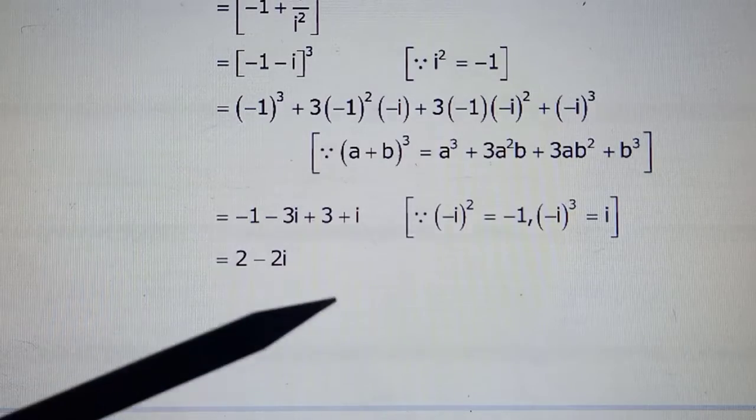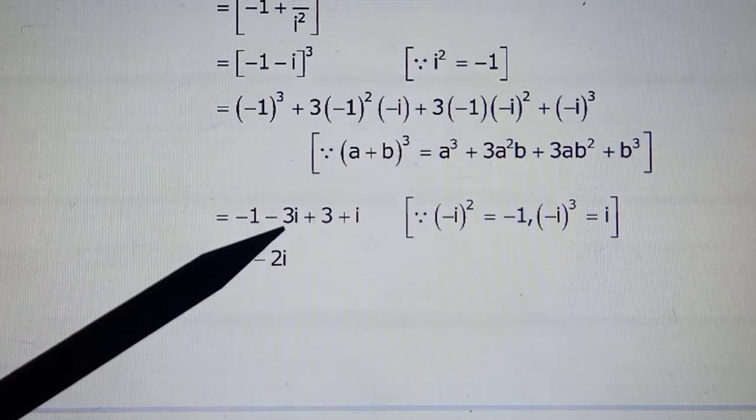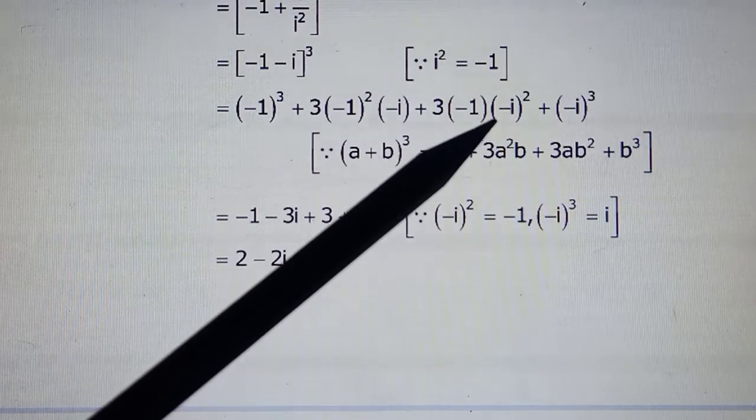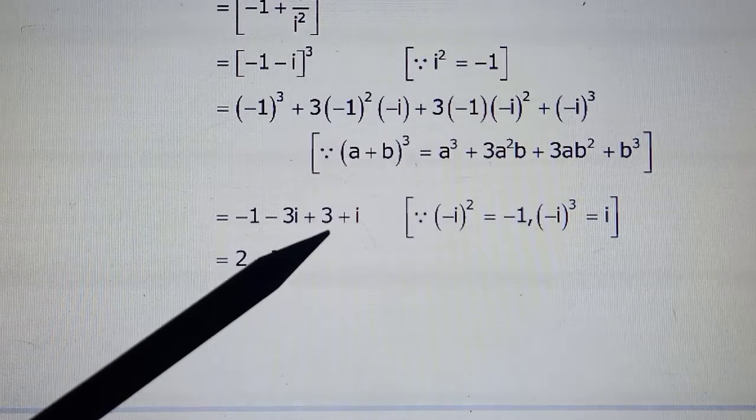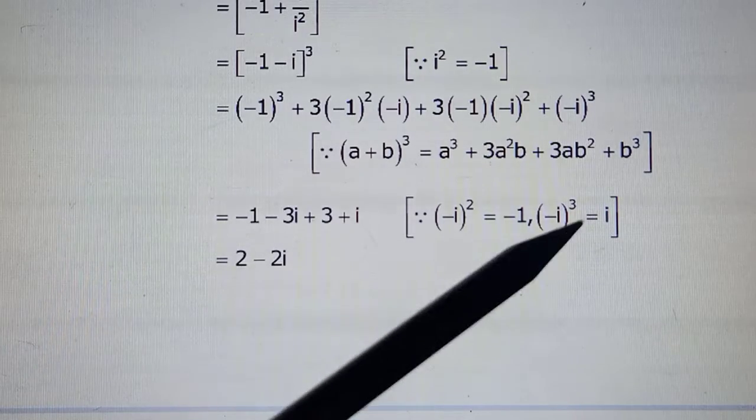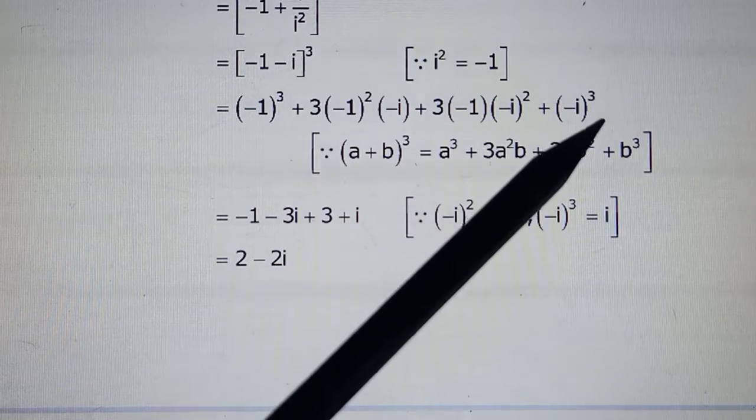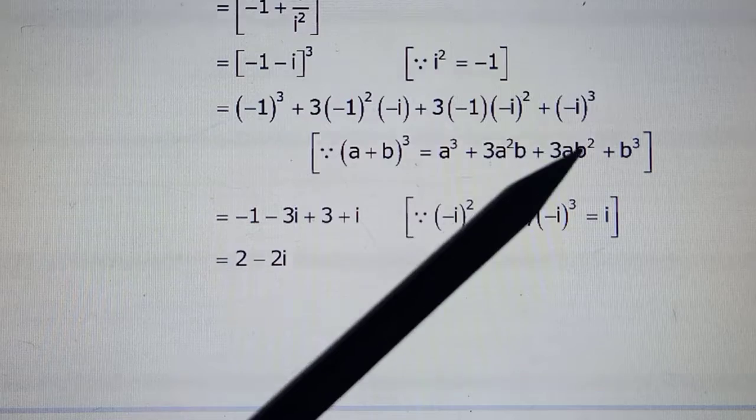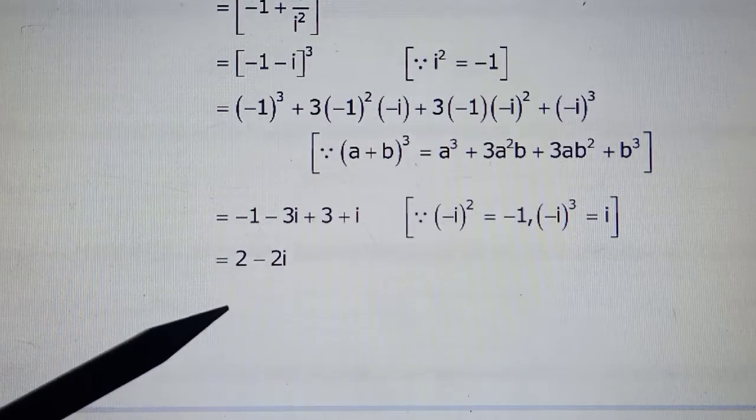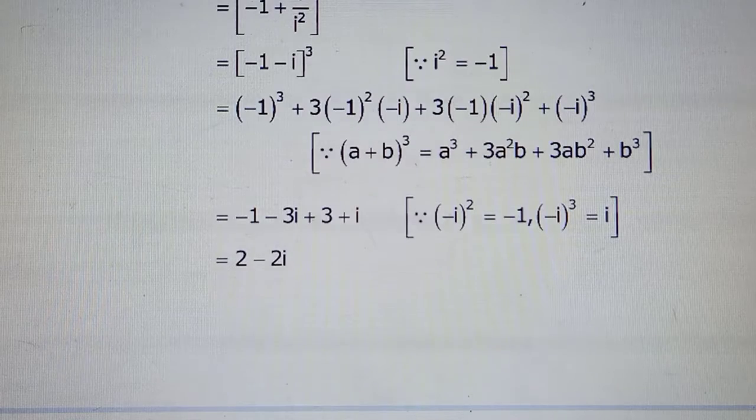Put the values there and expand it. So that becomes -1, this becomes -3i. Here you have i^2 which will become -1, so -1 times -1 will make it positive, so +3. And this becomes -i^3, which is i^2 times i, again -1, so -1 times minus will make it +i. Hence that's your answer. Now putting i's together and the numbers together.